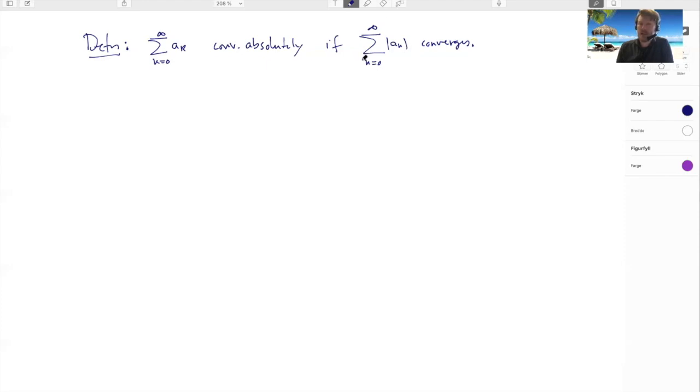Why would I do this? Because if I prove that this guy converges, doesn't it really say anything about this guy? Well, yes, it says a little bit, not everything, but a little bit.